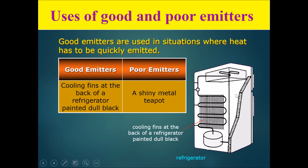At the back of your fridge, you should be able to see cooling fins painted dull black. A refrigerator works by using these cooling fins to transfer heat from inside the refrigerator outward. These fins are better suited to their purpose if they can lose energy fastest, so they are painted dull black to be better emitters of radiation and radiate heat faster.